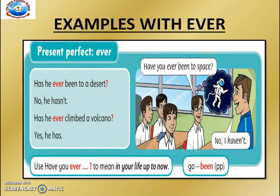Let's see the examples with ever. On page 87 of your class book, you can see Present Perfect with ever. In the picture, there are some students asking questions to Mr. Matt Jones. A student asks, 'Have you ever been to space?' and Matt Jones replies, 'No, I haven't.' On the left-hand side you can see: 'Has he ever been to a desert? No, he hasn't. Has he ever climbed a volcano? Yes, he has.'